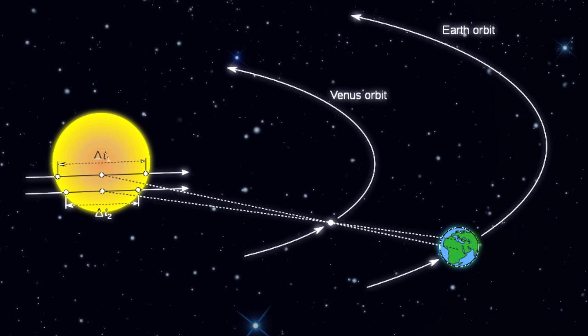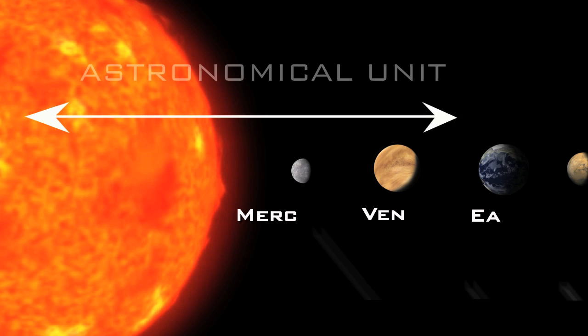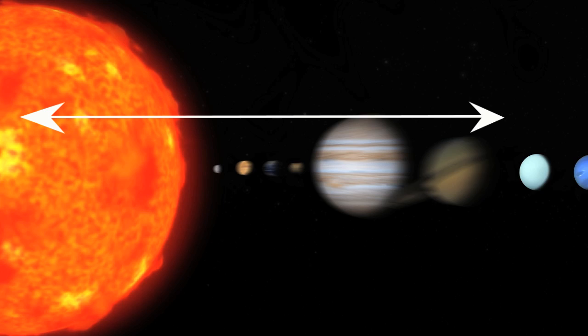Halley believed that using parallax could answer the question of the distance of the Earth to the sun. The average distance of the Earth to the sun is called one astronomical unit. From this unit, we have a common way to measure all distances in the cosmos.